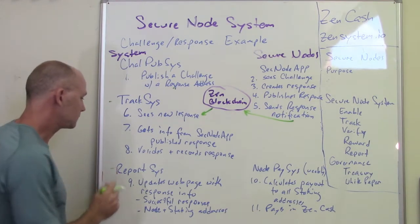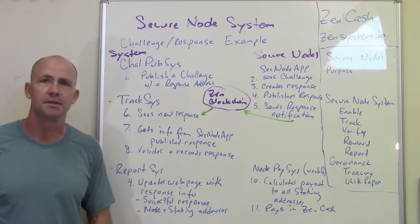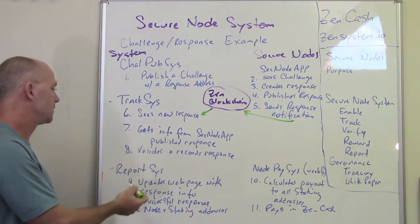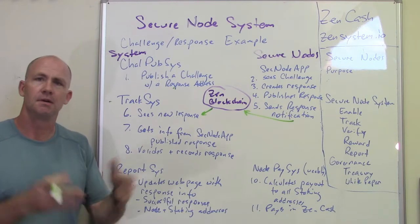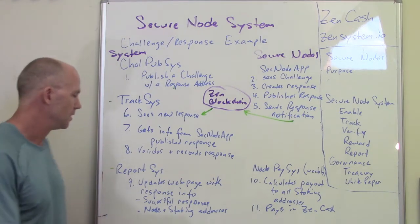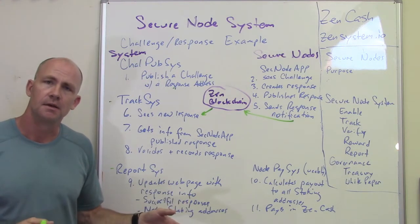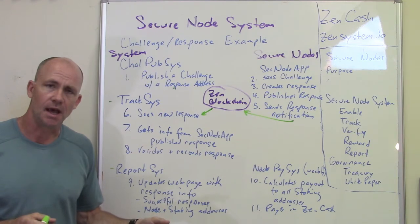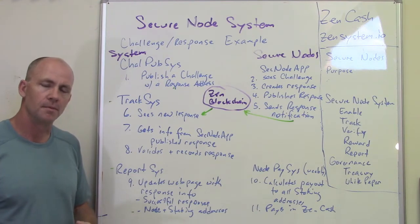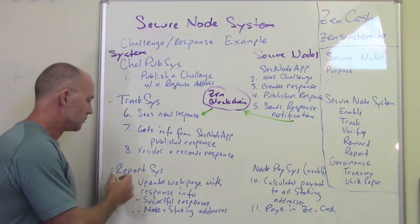Then the reporting system — this is what users can see. This is running a web page. It gets information from the tracking system — it can be on the same server, though it's probably better not to be. When a new response comes in, it updates the web page so people can see that their responses are happening. It's going to be searchable. For each challenge period, it has a record of every secure node and address and staking address that did a valid response, and it'll also publish that information in the form of a graph over time.